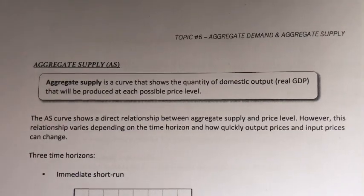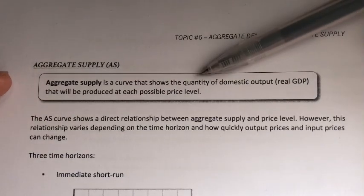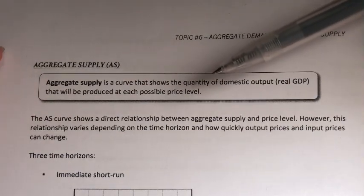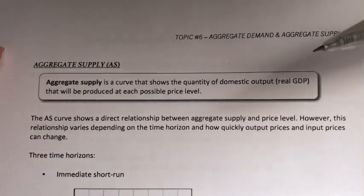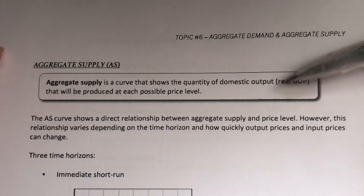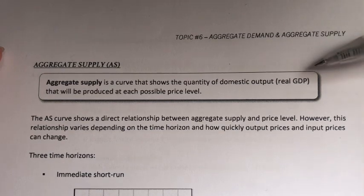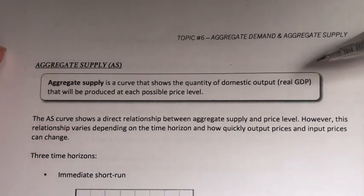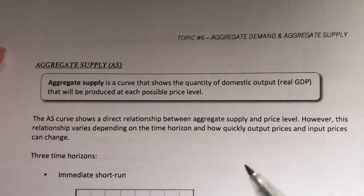Hi guys, Assalamualaikum. Welcome back to another virtual lecture. In today's video, we're going to learn about aggregate supply. Now let's look at the definition first. Aggregate supply is a curve or schedule that shows the relationship between the amount of real domestic output or GDP that firms produce in that economy with the nation's price level. So the aggregate supply curve shows a direct relationship between total production and price level.